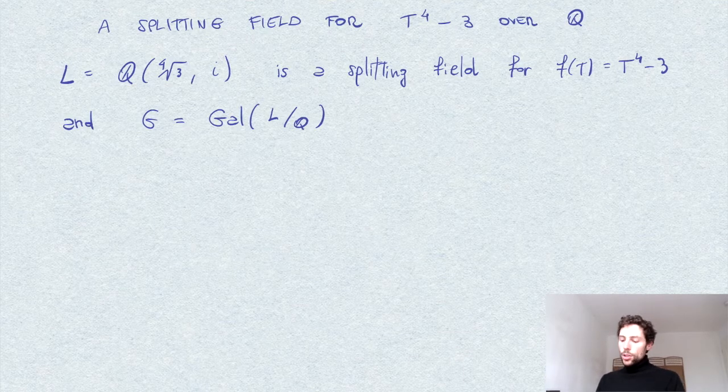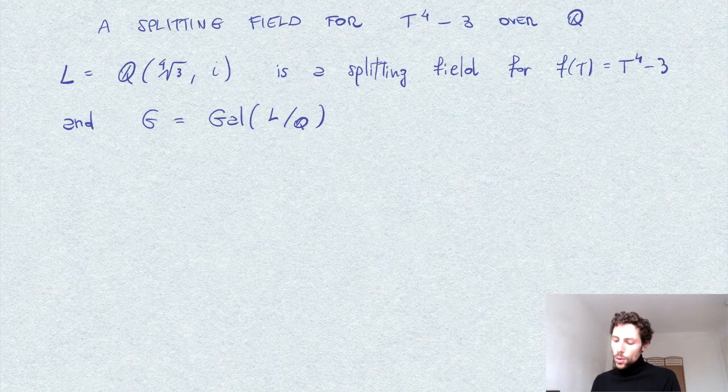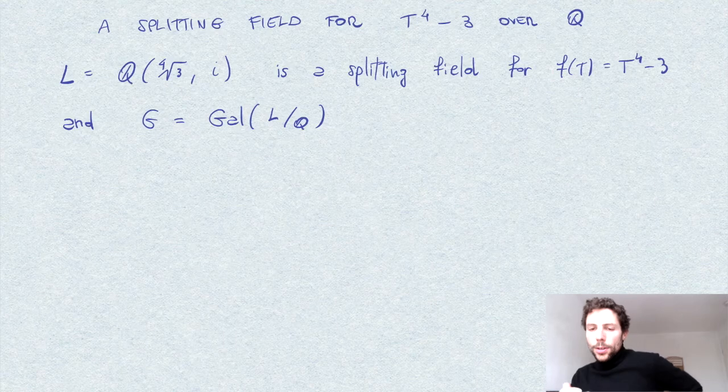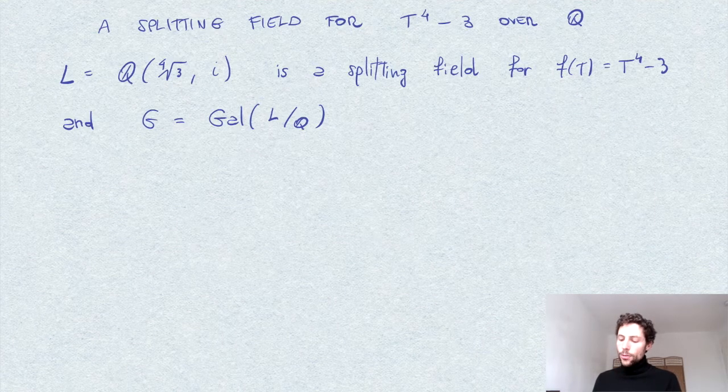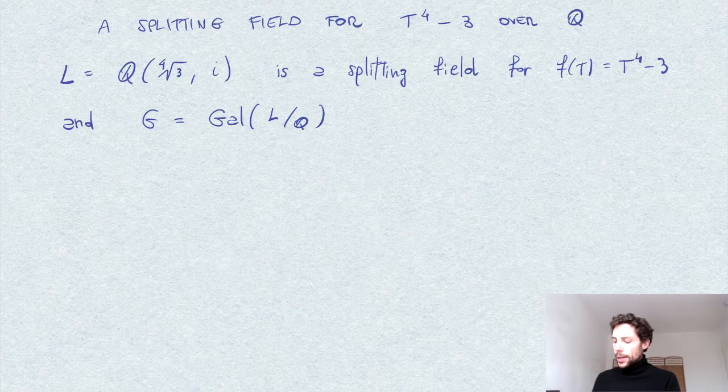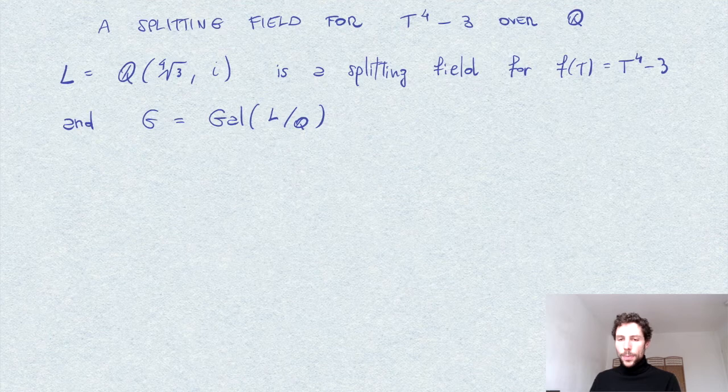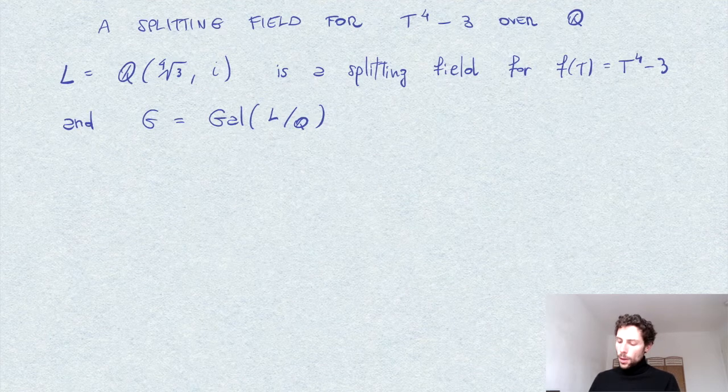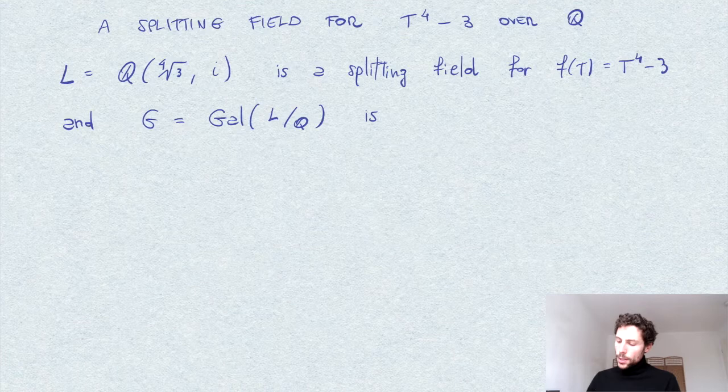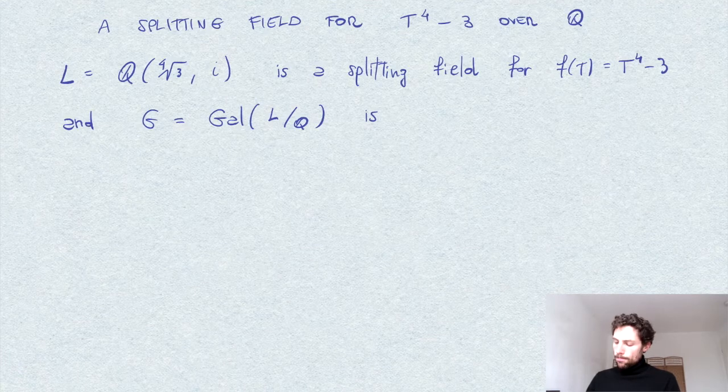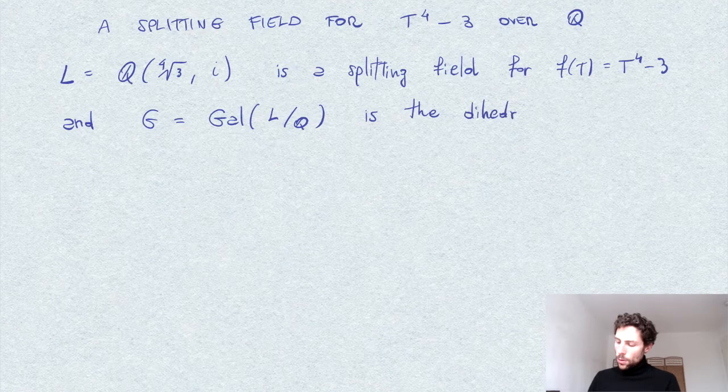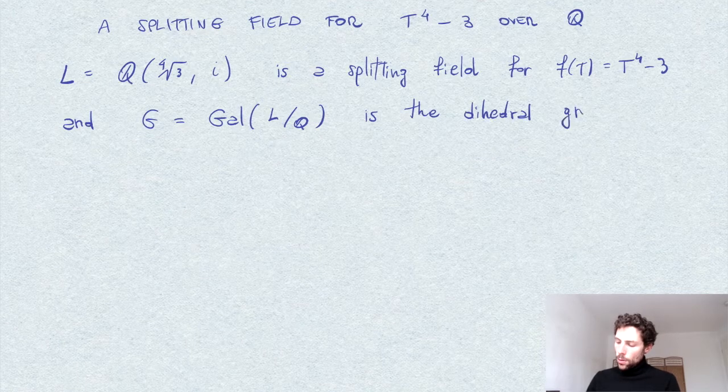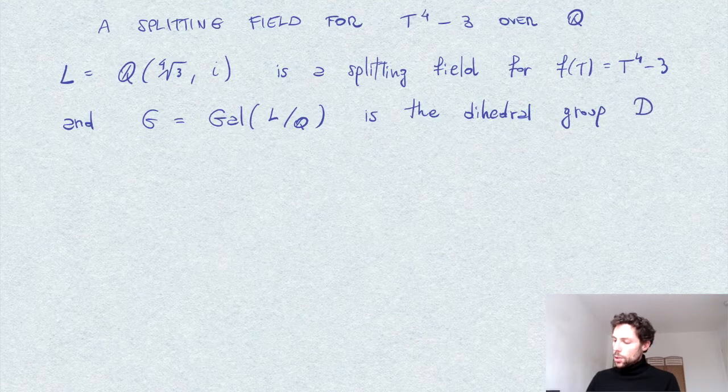We can show that it is isomorphic to the dihedral group, which is the group of symmetries or reflections and rotations of a square. So this G is isomorphic to the dihedral group of order 8, which is usually denoted D4.